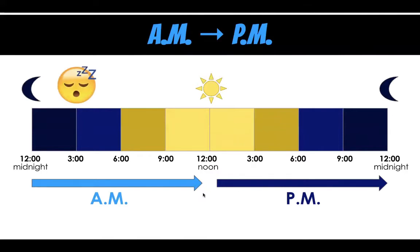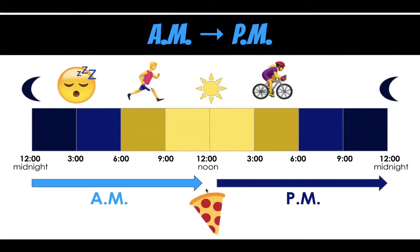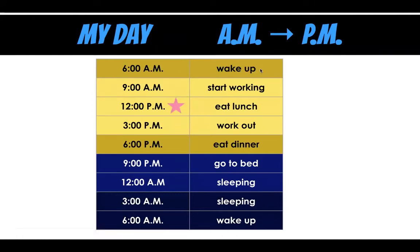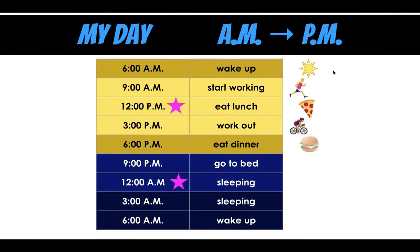At midnight until about six o'clock, we are sleeping. At six o'clock, it's time to wake up and go for the day. At noon, we eat lunch - I like pepperoni pizza. Then we continue on with our day from noon until about six when we eat again, and then we go to bed. Looking at a schedule: at six o'clock I wake up, at nine o'clock I start working, at 12 o'clock I eat lunch, and at 12 p.m. is when we switch from a.m. to p.m. Three p.m. - work out. Six p.m. - eat dinner. Nine p.m. - go to bed. Twelve a.m. - that's where it switches again, and we are sleeping. So we wake up, we work, we eat lunch, maybe work out, eat dinner, go to bed, and then we wake up and start it all over again.